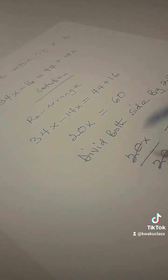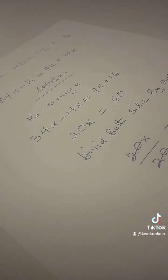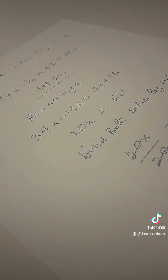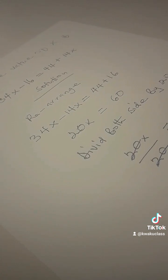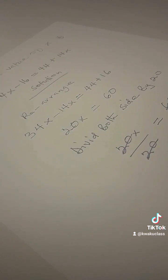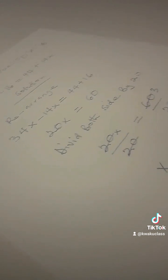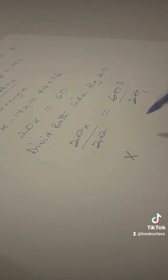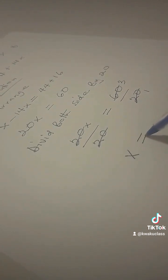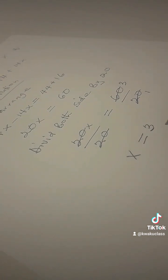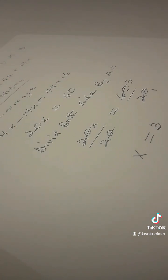Now you do the cancellation. 20 cancels 20 remaining x. Now 20 cancels itself to give you 1, then 20 cancels 60 to give you 3. So therefore, x is equal to 3. So the value of x is 3.